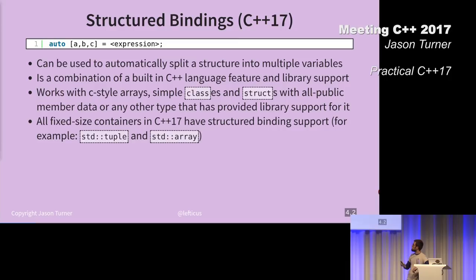All the fixed-sized containers in C++ 17 have structured binding support. I say fixed-sized containers, that's tuple and array, and I guess I left out pair. There's no other fixed-sized container, right?